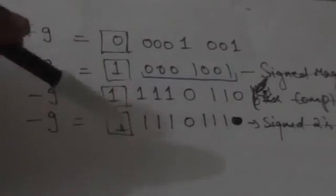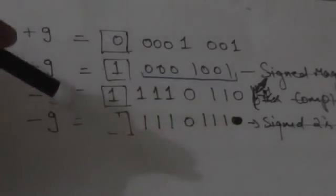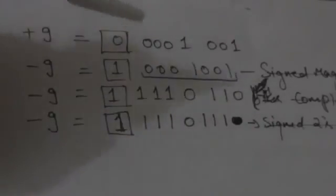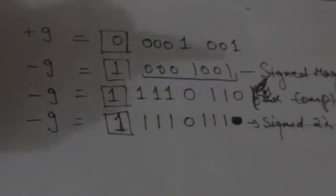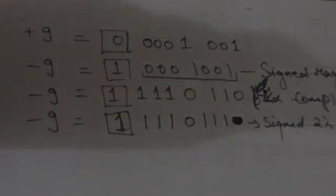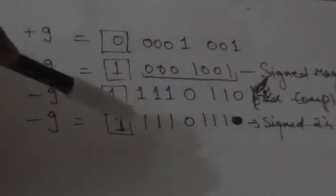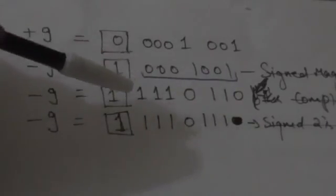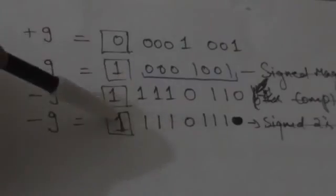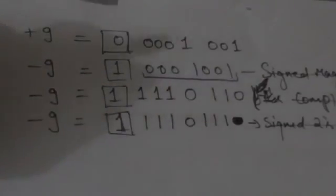Now suppose we have to represent -9 in the signed two's complement representation system. In this case we will take the two's complement of the signed binary number which represents the value +9, including its sign bit. So we write the two's complement of this binary number including its sign bit, and the result is a signed binary number that represents the value -9.